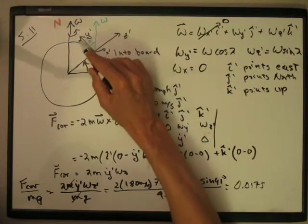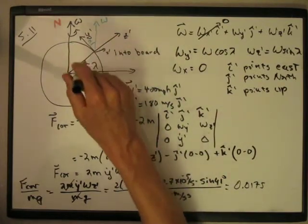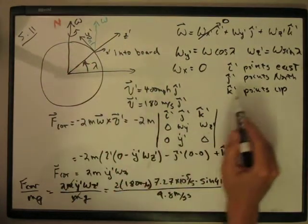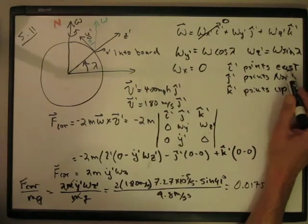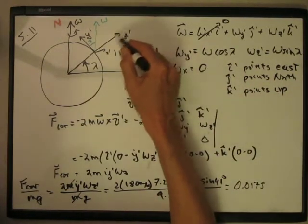North is the y prime axis, right? X prime is into the board, so that's pointing east. I have that written somewhere. So i hat prime points east, j hat prime points north, and k hat prime points up.